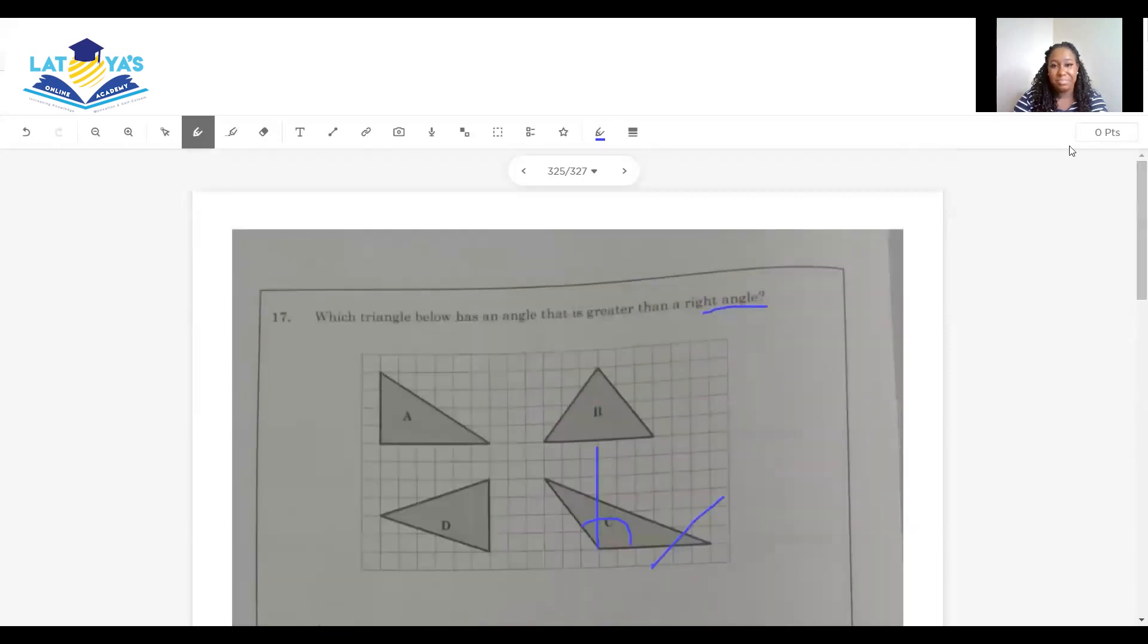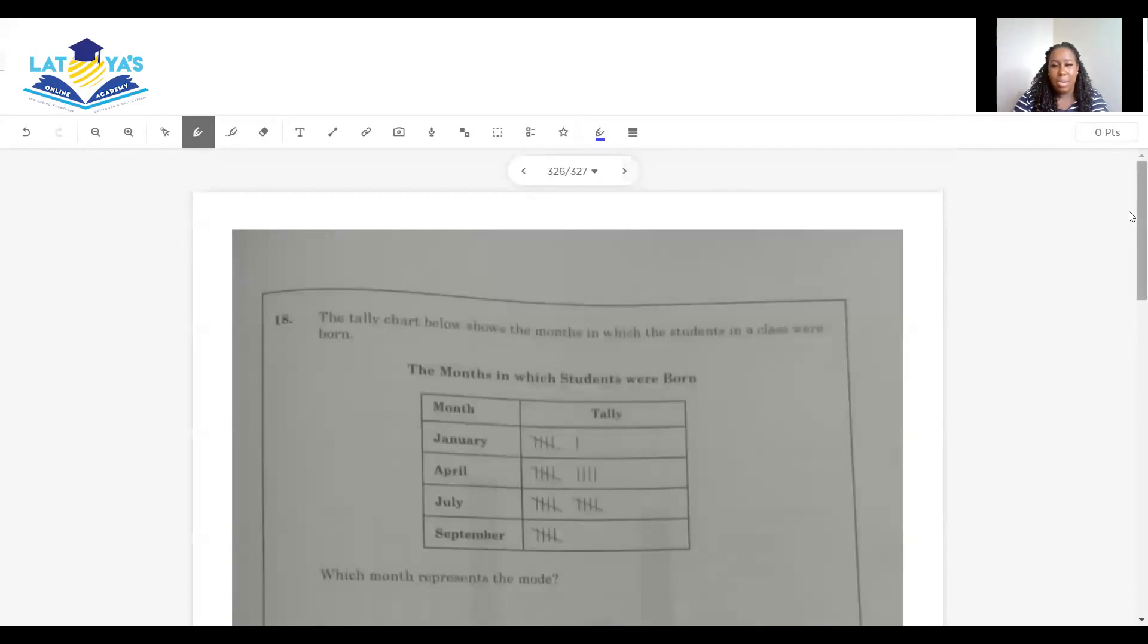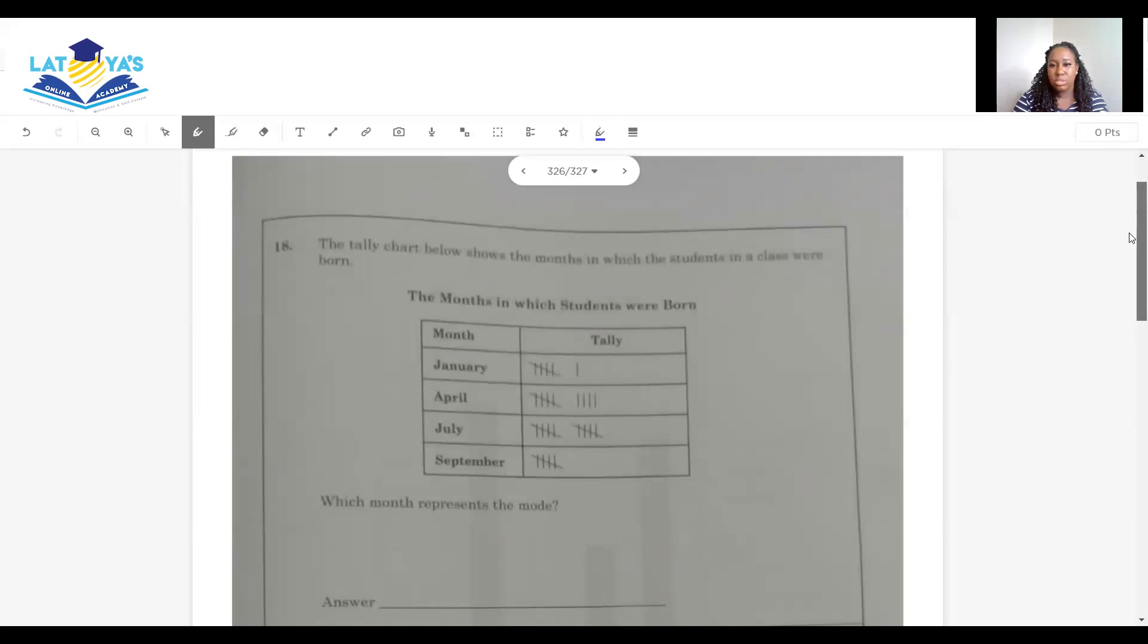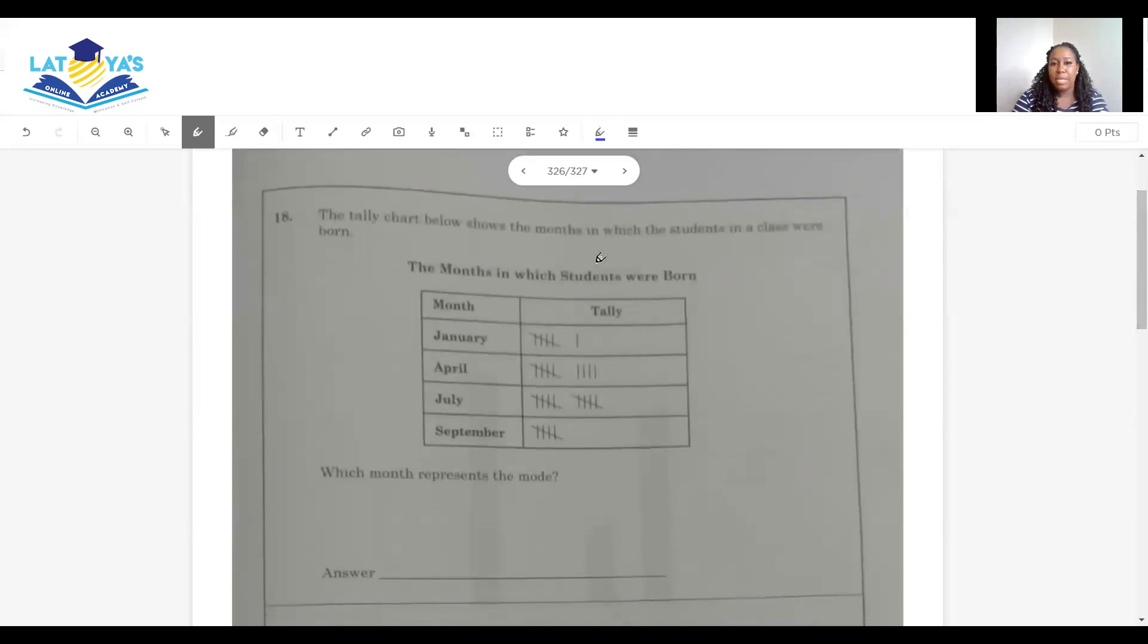Question 18. The tally chart below shows the months in which the students in a class were born. The months in which the students were born: months, January, April, July, September. Tally is given here. This tally represents how much? This tally represents 5. This represents 6, 5, 6, 7, 8, 9. This represents 10. And this represents 5. The question asks us, which month represents the mode? Which tally is the greatest? Which tally is the greatest? This one. Which month represents the mode? The month that represents the mode is July.